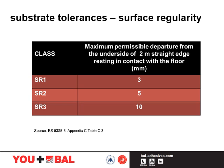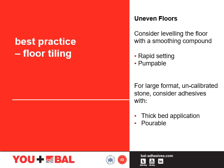The maximum deviation between tiled surfaces either side of a grout joint or movement joint should be 1mm for grout joints less than 6mm wide and 2mm for grout joints 6mm wide or greater. For uneven floors that do not achieve the SR1 classification, we should consider levelling the floor with a smoothing compound. These come in all different shapes and sizes and we have rapid setting pumpable products available. Some of them go up to 80mm and dry within 4 hours ready for tiling. For large format uncalibrated stone, consider adhesives which have a pourable nature and can be used in thick bed applications.